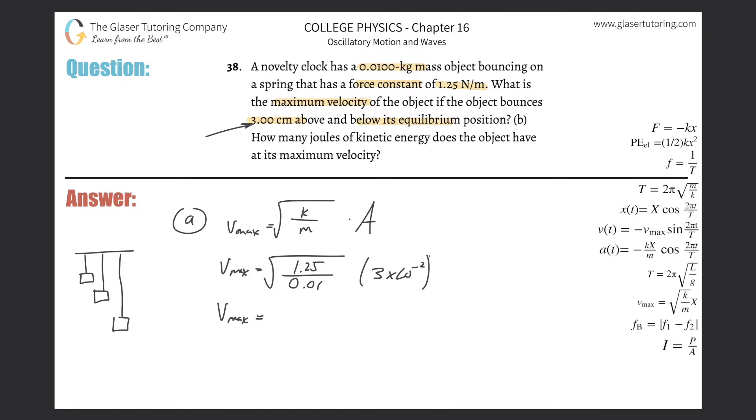And voila, let's calculate. So square root of 1.25 divided by 0.01, and then take that multiplied by 3 times 10 to the minus 2. And here the maximum velocity is going to be 0.335. That is meters per second.